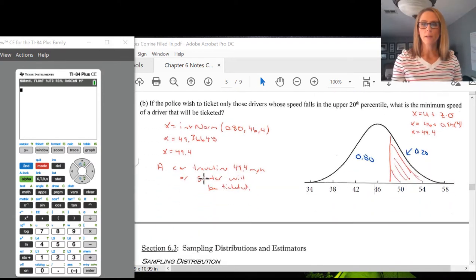So in part B, if the police wish to ticket only those drivers whose speed falls in the upper 20th percentile, what is the minimum speed of a driver that will be ticketed? When I see a problem like this that mentions we know that the data is normally distributed and we're being asked about percentiles,